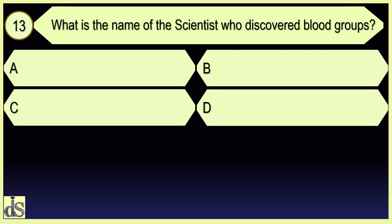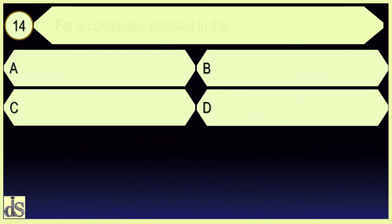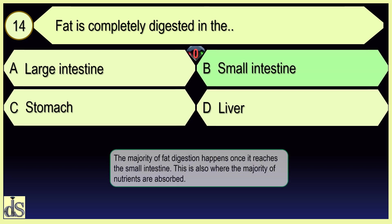What is the name of the scientist who discovered blood groups? The yeast fat is completely digested in the small intestine.